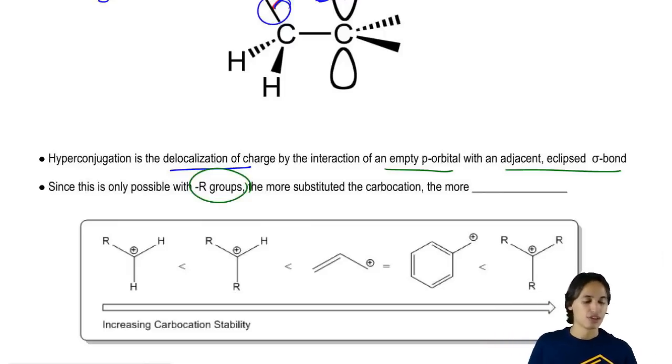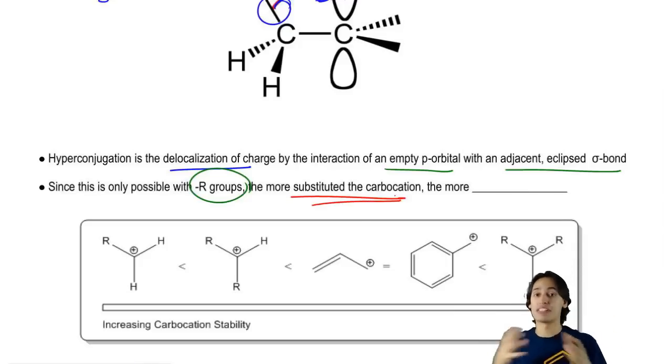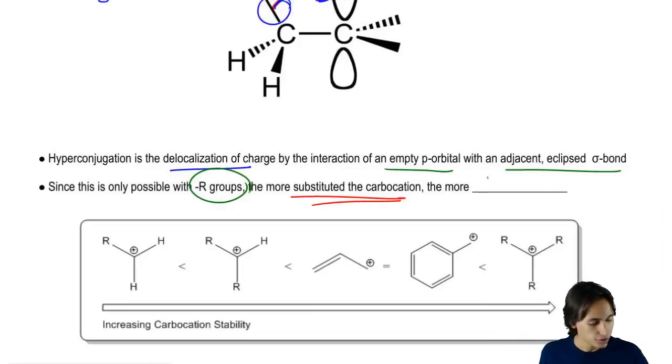So what that means is that the more substituted my carbocation or the more R groups I have attached to it, the more stable.